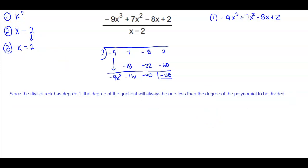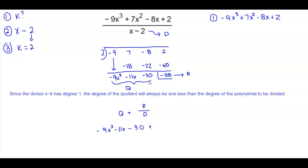When we write our answer, it's going to be the quotient plus the remainder divided by the divisor when we have a remainder left over. So x minus 2 represents our divisor, this represents our quotient, and negative 58 represents our remainder. We write the quotient, which is negative 9x squared minus 11x minus 30, plus the remainder, which is negative 58 divided by the divisor x minus 2.